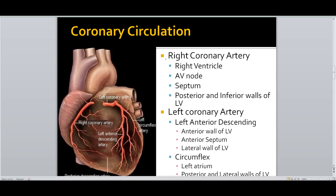Now let's talk about coronary circulation. It is split into the right coronary artery and the left coronary artery. The right coronary artery supplies the right ventricle, the AV node, the septum, and the posterior and inferior walls of the left ventricle. The left coronary artery splits into the left anterior descending (LAD) and the circumflex. The LAD supplies the anterior wall, the anterior septum, and the lateral wall of the left ventricle — an anterolateral distribution. The circumflex supplies the left atrium and the posterior and lateral walls of the left ventricle — a posterolateral distribution.